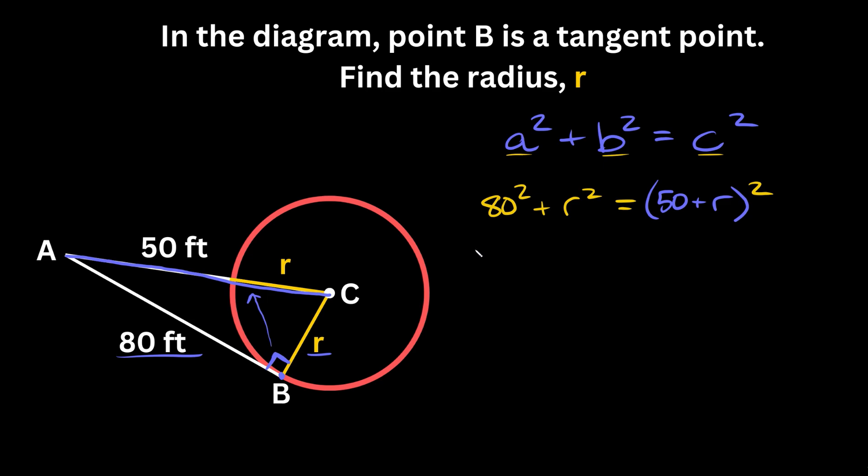80² is 6,400. R² is just R². And (50 + R)² we can multiply out—we're going to have to FOIL. So we have (50 + R)(50 + R). 50 times 50 is 2,500.